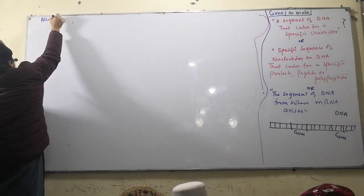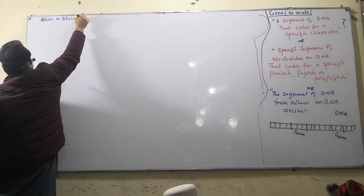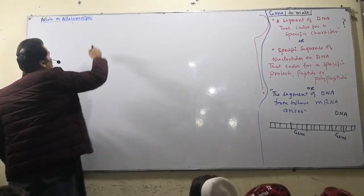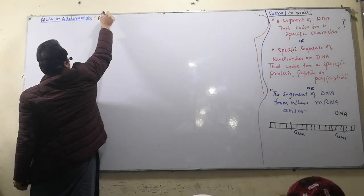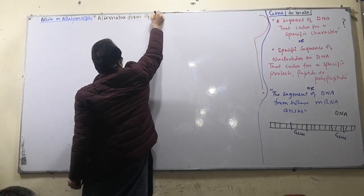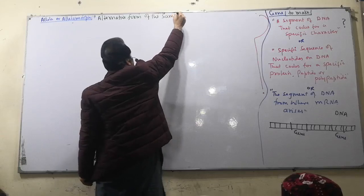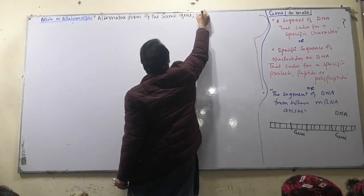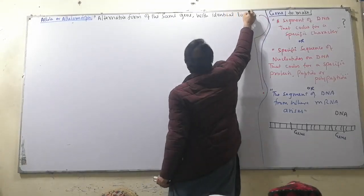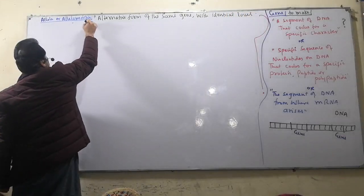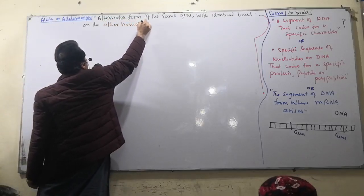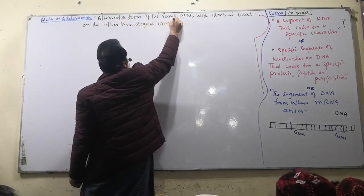Allelum, or allele, is defined as an alternative form of the same gene. An allele is associated with a chromosome — identical loci on homologous chromosomes. In this context, an allelum is located on a chromosome.